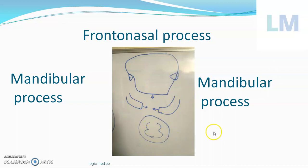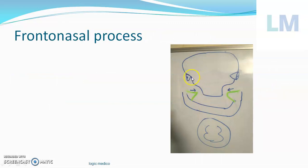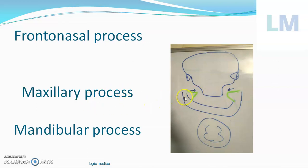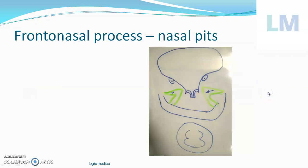The frontonasal process is further affected by another bulge from the posterior and superior border of the mandibular process — this is called the maxillary process. This maxillary process squeezes the lower portion of the frontonasal process. Otherwise our eyes would be oriented laterally like a bull, but because the maxillary process grows medially, it squeezes the lower end of the frontonasal process, making the nose bulge forward. The frontonasal process later develops a pair of pits called nasal pits.